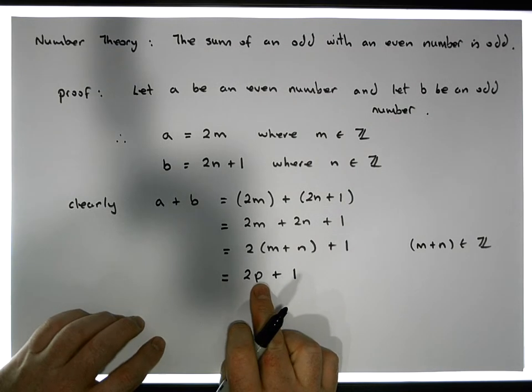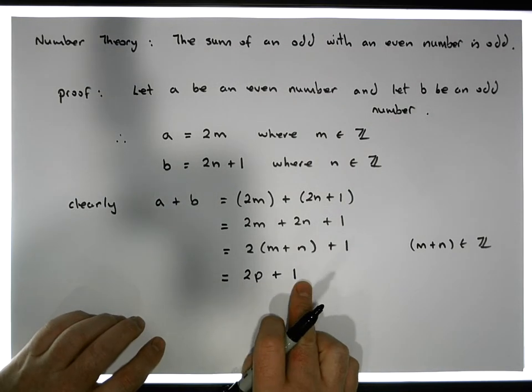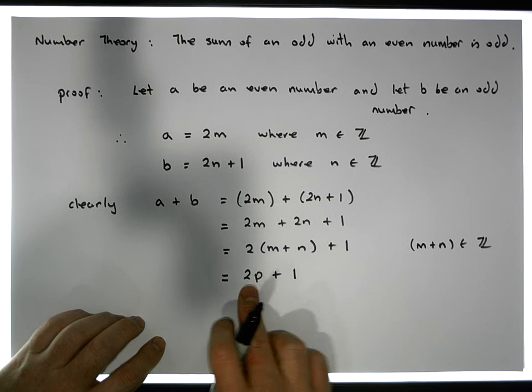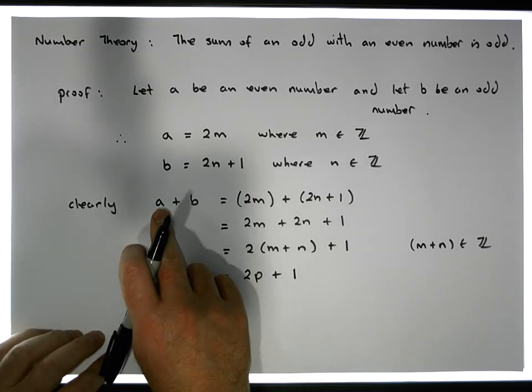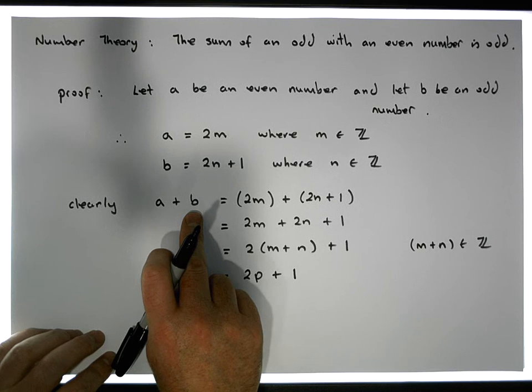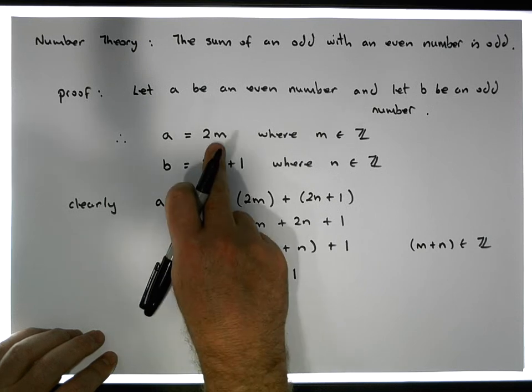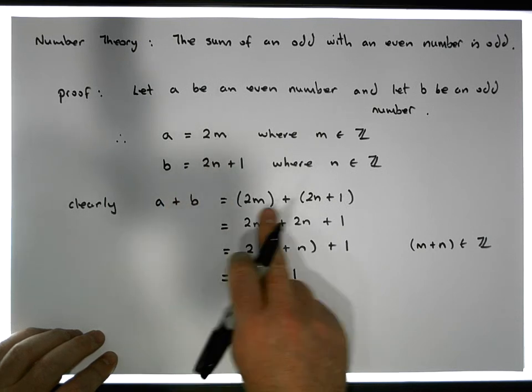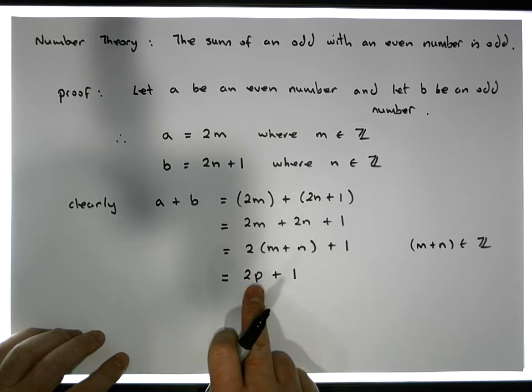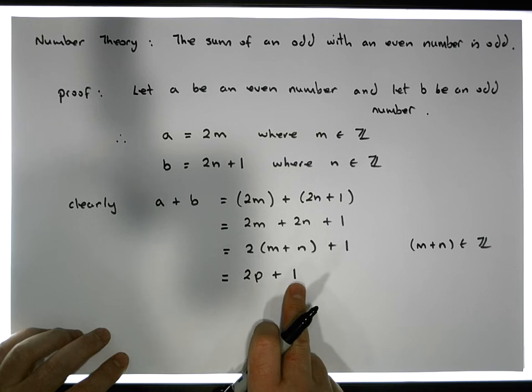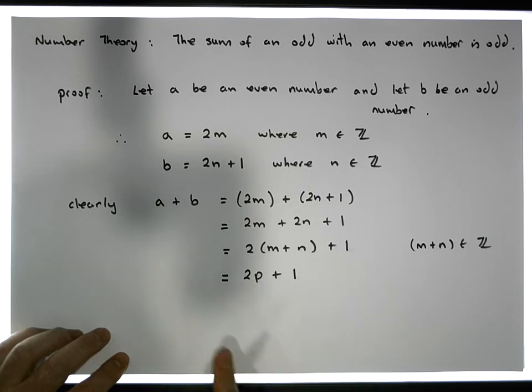So two times P is an integer, plus one. This is actually the definition of an odd number. So what we've actually shown is that given an even number A and given an odd number B, and given their representation based off the division algorithm, we've shown that the summation of them, when we sum them together, what we get is two P plus one, which gives us an odd number. We always get that. This is the definition of what an odd number is.